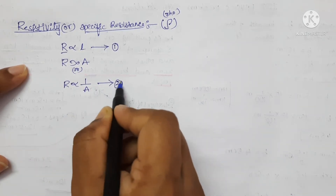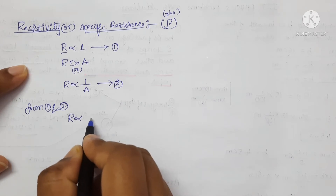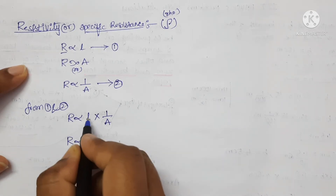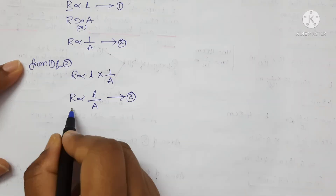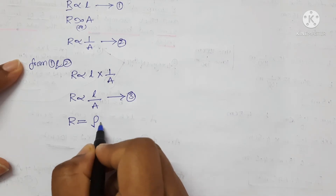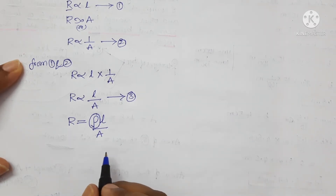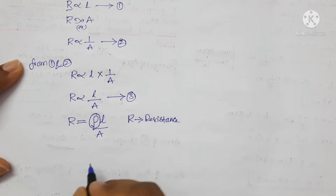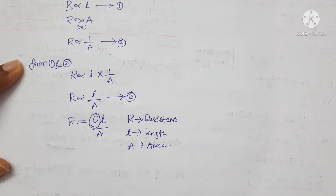From equation number 1 and 2, we can write resistance is directly proportional to L upon A — let that be equation number 3. Now, removing the proportionality by introducing the proportionality constant rho gives R equals rho L by A. Here, rho is the proportionality constant called as resistivity, R is the resistance, L is the length of the conductor, and A is the area of cross section of the conductor.